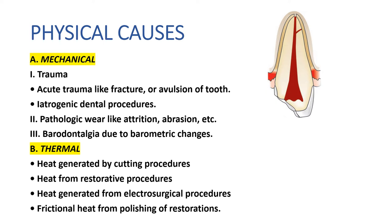The next thermal cause is heat from restorative materials — heat conducted by fillings. Metallic fillings placed close to the pulp without a cement base can conduct temperature changes and lead to irreversible pulp damage. Therefore, when placing a metallic restoration, a base must be placed first before the restoration.